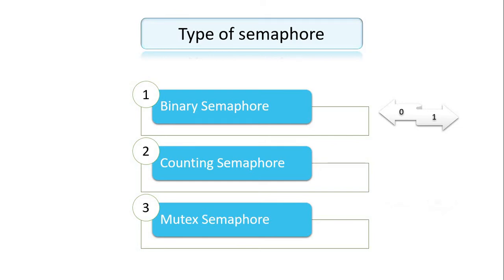There are types of semaphores. Counting semaphore — the value can range from minus infinity to infinity. The first example is the binary semaphore, which is used to work with the critical section.